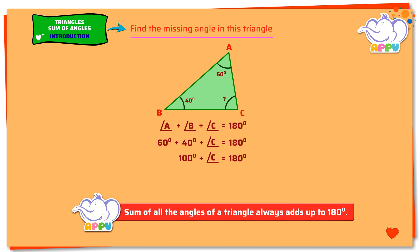We subtract 100 degrees from both sides. We get angle C equals 180 degrees minus 100 degrees. That is equal to 80 degrees. The missing angle is 80 degrees.